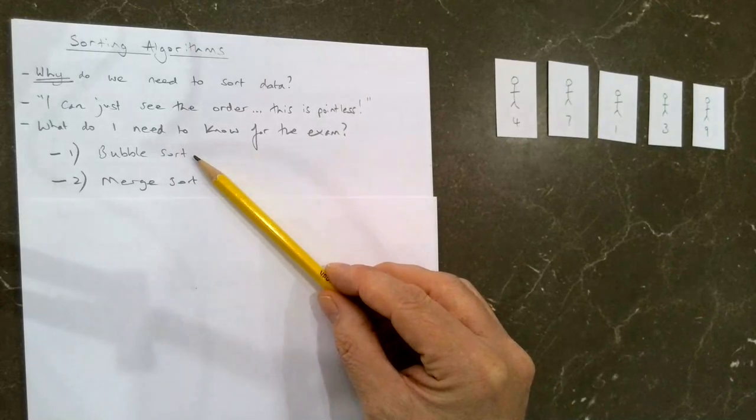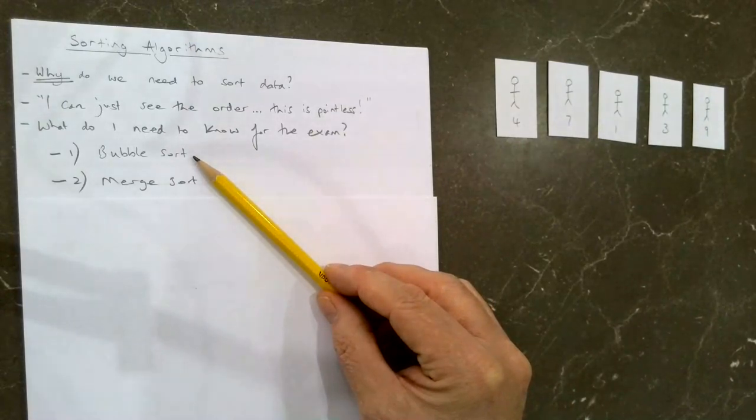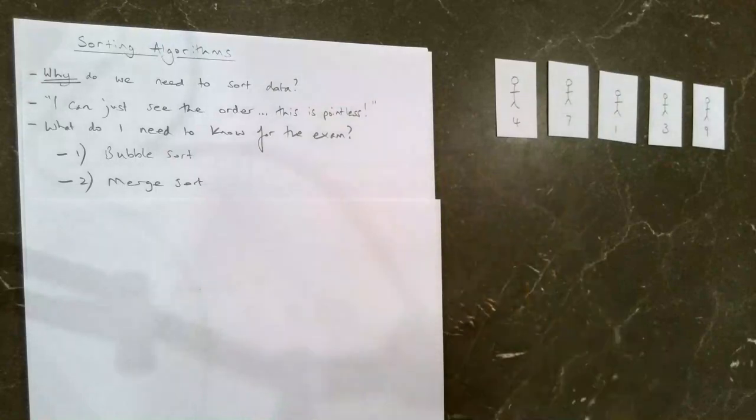Easy to code, good for a small number of things. Difficult to code, good for a big number of things. So that's it in terms of introduction. If you check out the next video, I'll start talking in more detail about how to actually perform a bubble sort. Thank you.